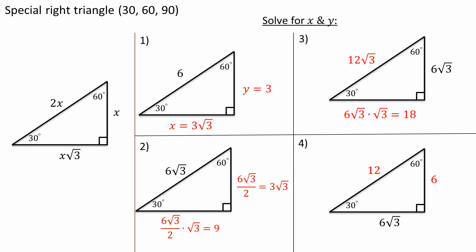And now for the last problem. So they give us 60 degrees corresponding to 6 times the square root of 3. And we know 30 degrees would be divided by the square root of 3, so that gives us 6. Likewise, we know that 90 degrees would be double of 30 degrees, so it would be 12. Now we can always check because this is a right triangle — we could do this value squared plus this value squared equals this value squared. And that's pretty much it for this video.